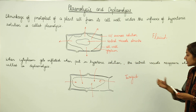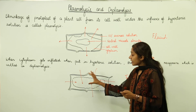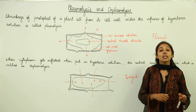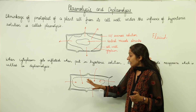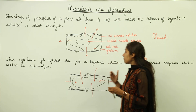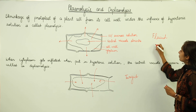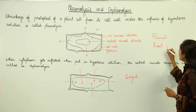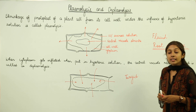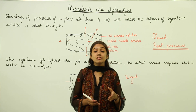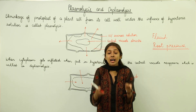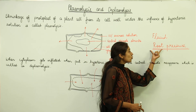When we talk about turgidity, a turgid cell cannot accommodate more water molecules inside. When the root cells are in the turgid state, they develop a pressure that we call root pressure. When the root cells become fully turgid, they exert pressure, and due to that pressure water moves upwards through the xylem vessel — that pressure is known as root pressure.